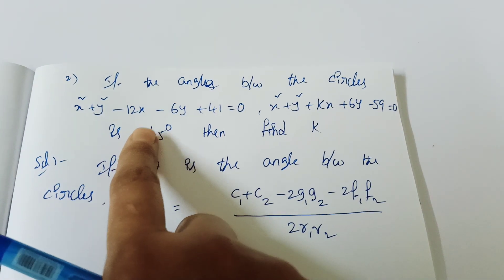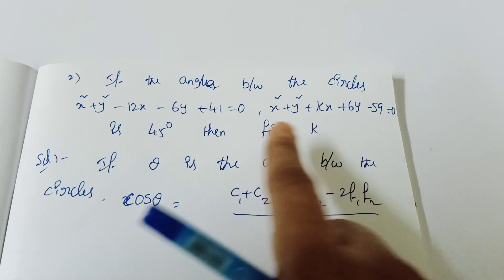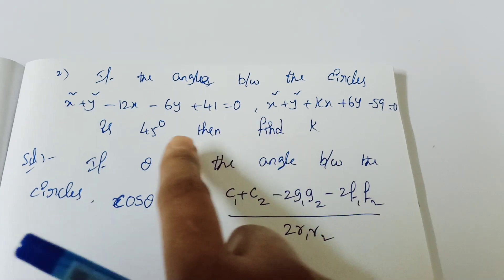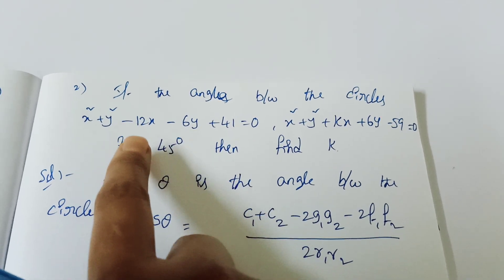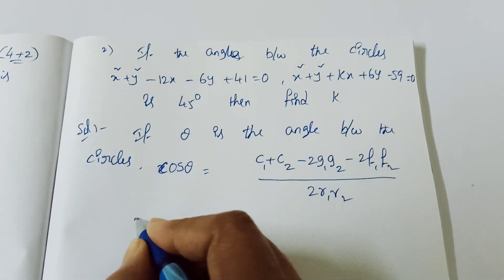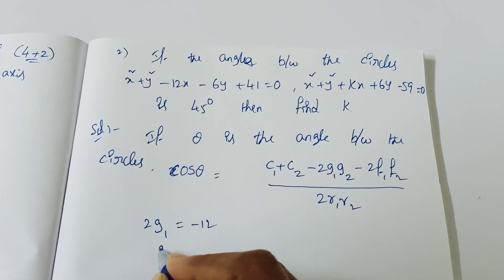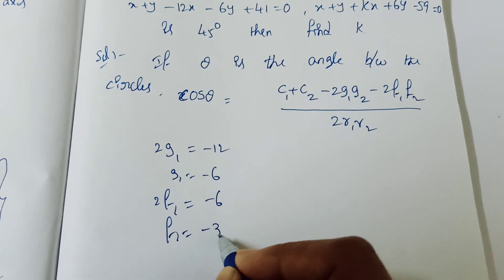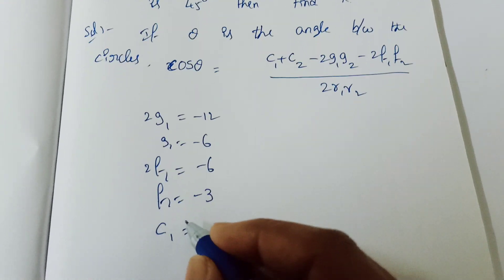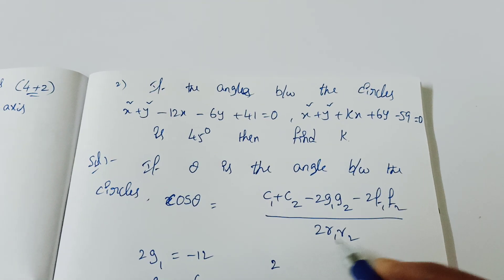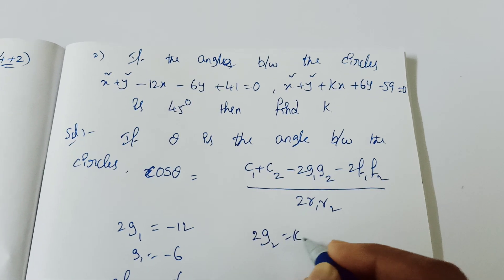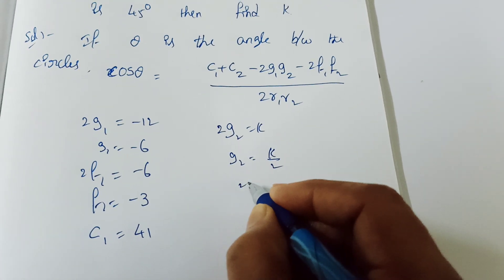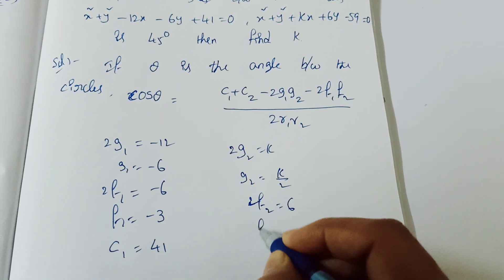From the first circle we identify g1, f1, c1, and from the second circle g2, f2, c2. Comparing: 2g1 = −12 so g1 = −6; f1 = −3; c1 = 41. For the second circle: 2g2 = k so g2 = k/2; 2f2 = 6 so f2 = 3; c2 = −59 or −10 approximately.